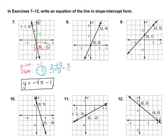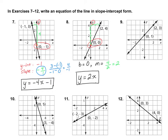Let's take a look at number 8. Our b is where it crosses the y-axis, so b equals 0. The slope m: counting up 1, 2, 3, 4 and over 2 — that's up 4 and over 2 in the positive direction, which simplifies to 2. So the answer is y equals 2x. I don't need to write plus 0, just like we did on number 2 — if you have a 0, you can take it out of the equation.